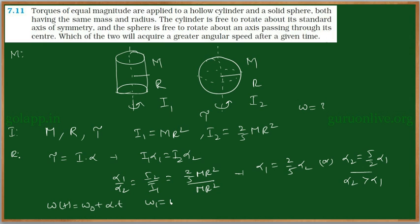In this case, ω₁ is equal to ω₀ plus α₁ into T. ω₂ is equal to ω₀ plus α₂ into T. Since α₁ is less and α₂ is greater, so clearly ω₂ is greater than ω₁.